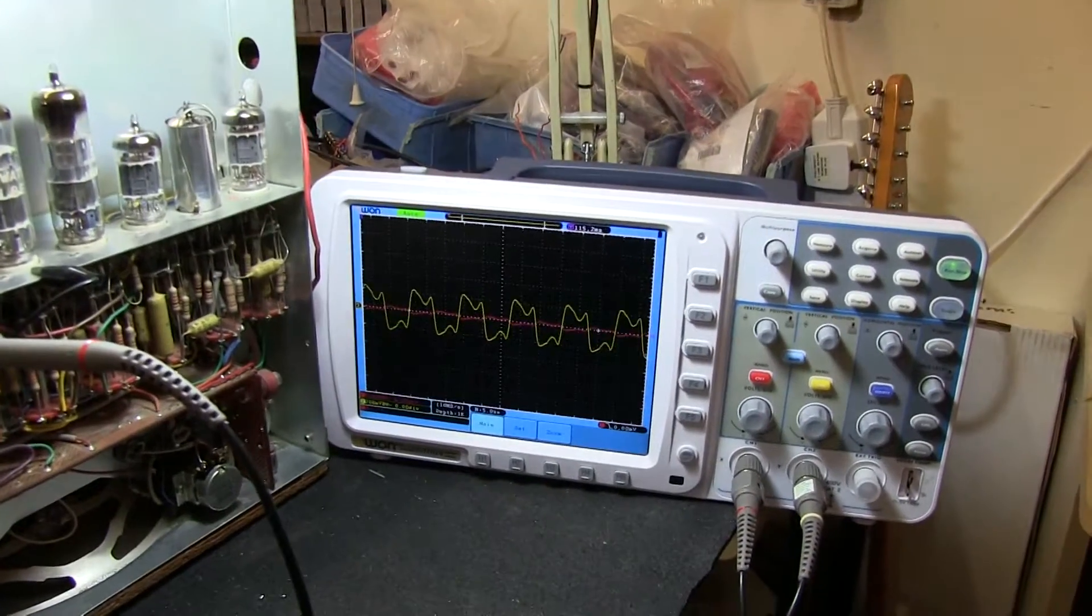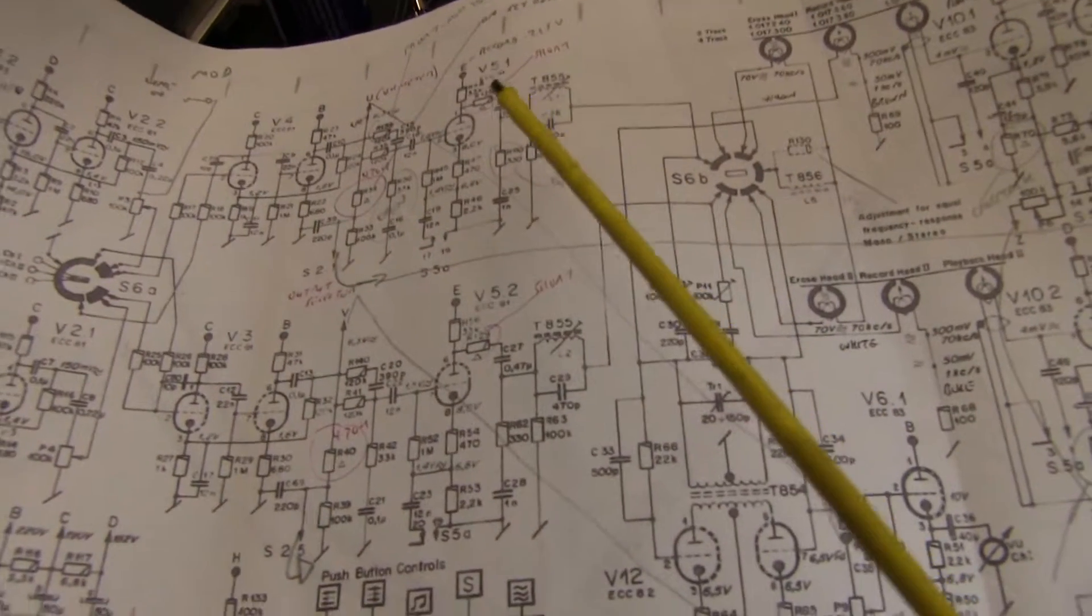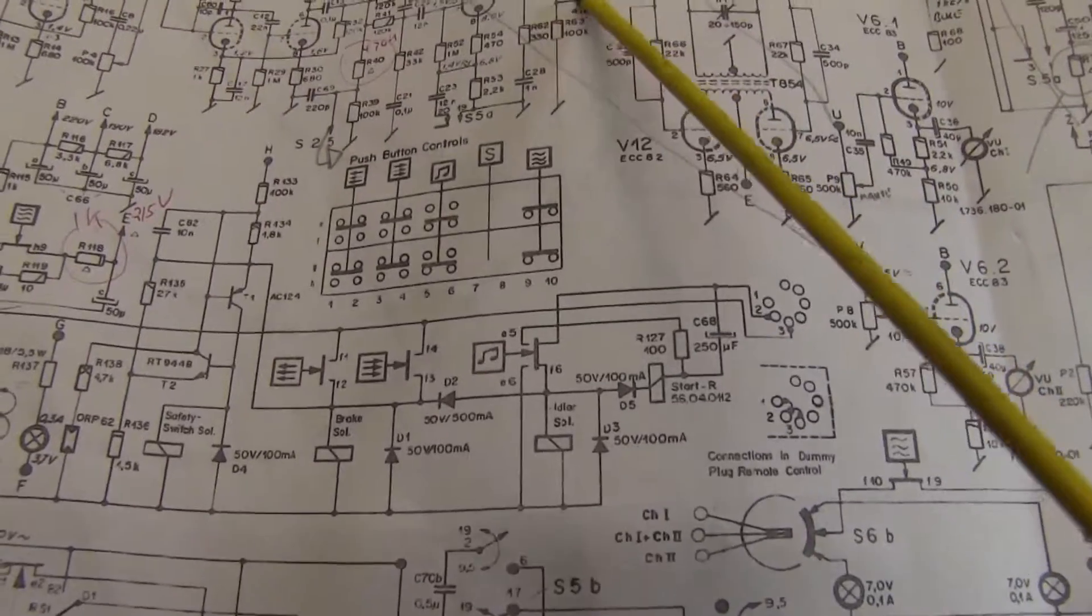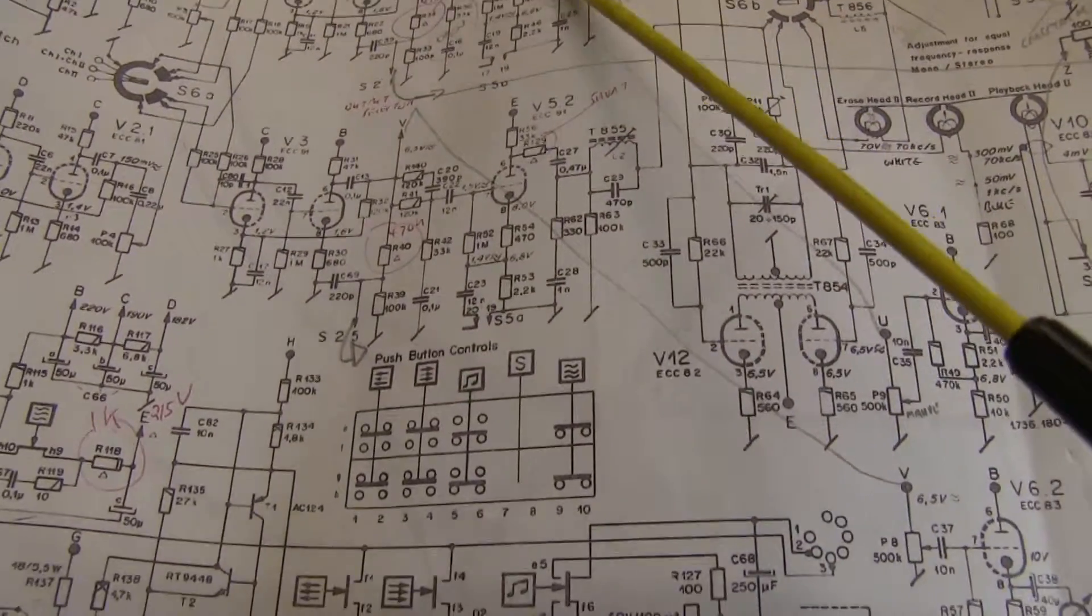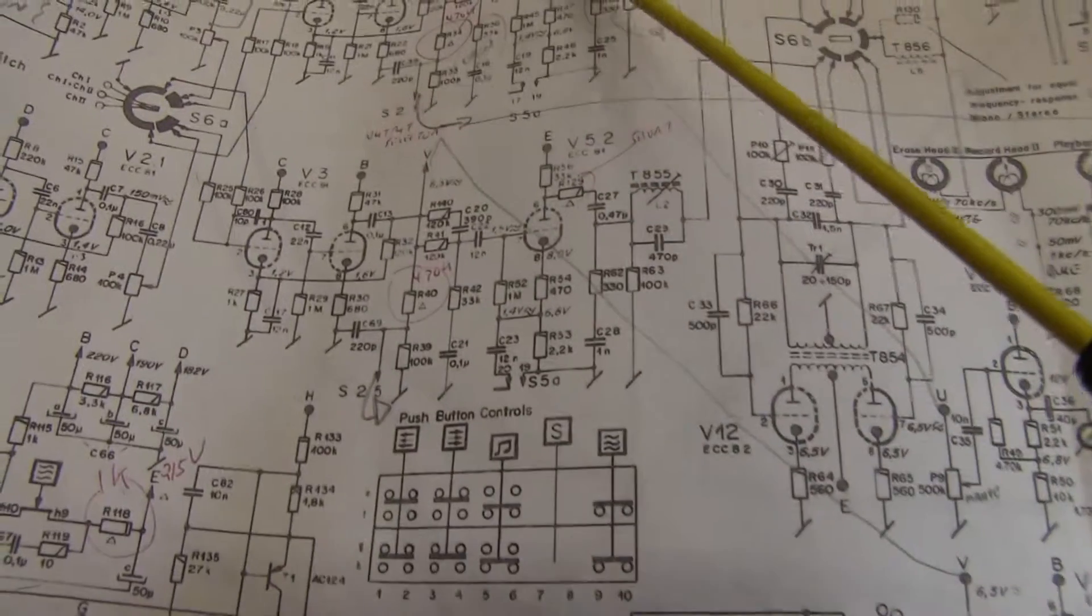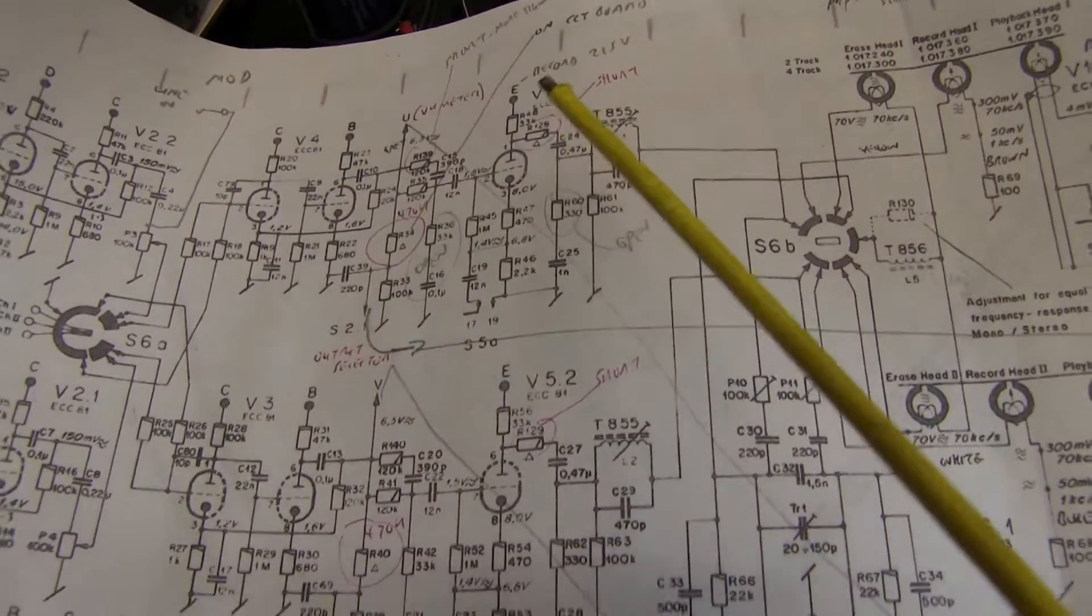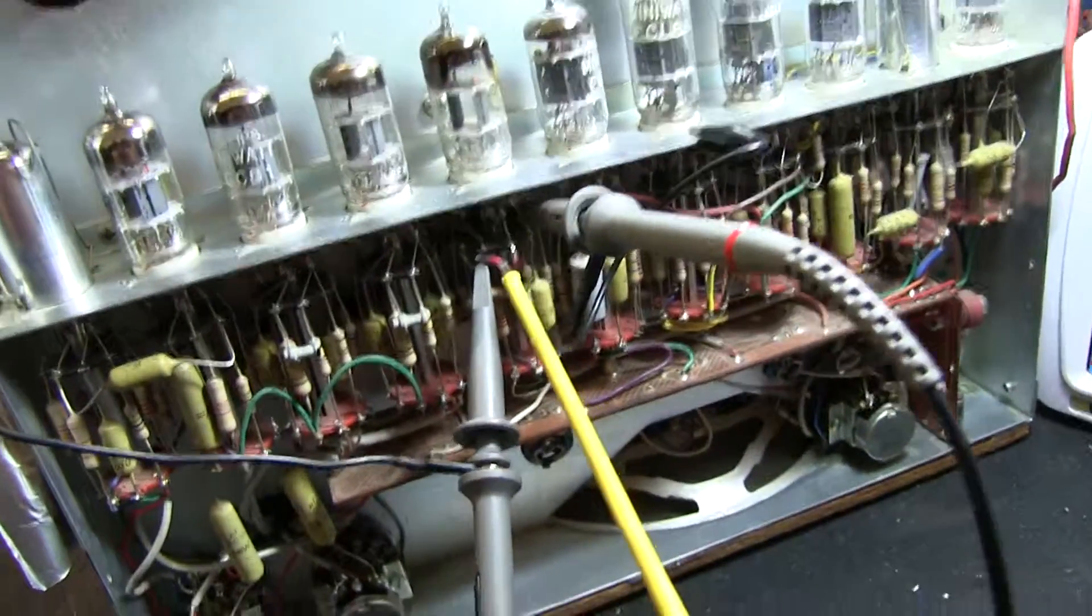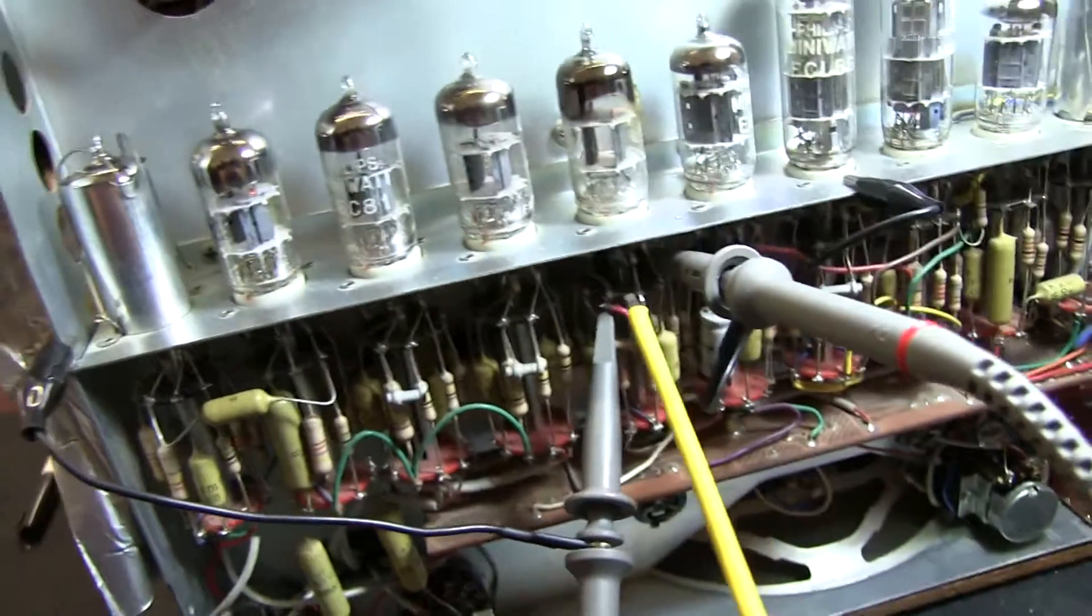Adjusting the bias traps on the Revox. Now on the circuit diagram we've got the bias trap here and the other channel. It's on this valve number V5, pin 6 and pin 1. So I've connected it up, that's valve 1, 2, 3, 4, 5. I've got it connected on pin 1 and pin 6 around the back.